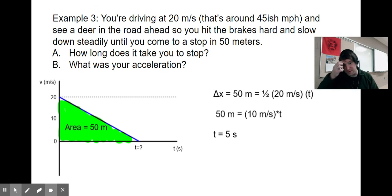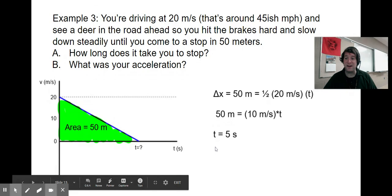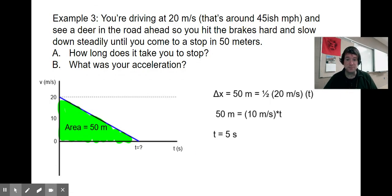If we think about doing the math with units: we divide 50 meters by 10 meters per second. Meters divided by meters per second—dividing by a fraction is the same as multiplying by the reciprocal. Meters divided by meters per second is the same as meters times seconds over meters. The meters divide out and we're left with seconds. It takes five seconds for that car to come to a stop.